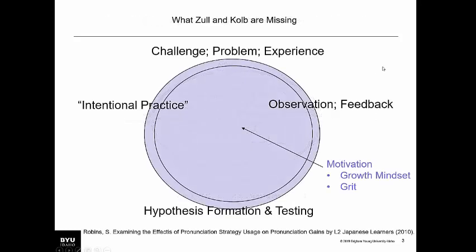Now, there are a couple of things that Zoll and Kolb were missing. First, concrete experience is a somewhat generic concept — we can think of it in terms of challenges, problems we're trying to solve, experiences we're having, or behaviors we're trying to emulate, like learning a language. Also, our observations might be incomplete, so we need feedback. As we've read, belief in our ability to learn, plus effort, plus help — that is, feedback from others — allows our brains to grow and develop. Feedback is a very important part.